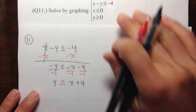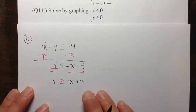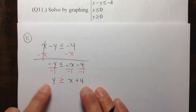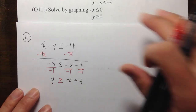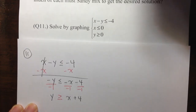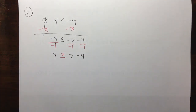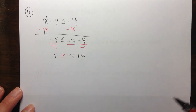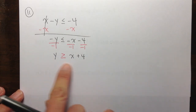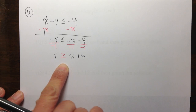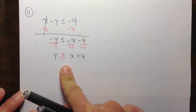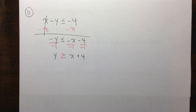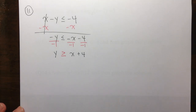So this equation is actually y is greater than or equal to x plus 4, and we are going to graph this instead. How do we graph this? You have many ways to do it. This is in slope-intercept form, so you can use the slope-intercept form method, or you can make a table — and that's my favorite because it pretty much always works. So let me do a table.